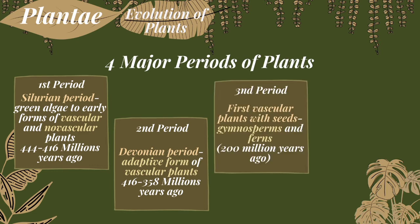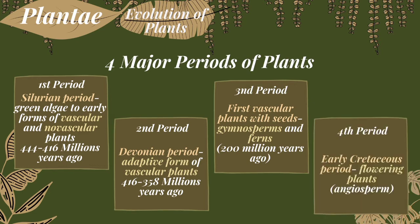The third period happened 200 million years ago, when vascular plants now had seeds — the birth of gymnosperms, a non-flowering plant. And lastly, the fourth period is the Early Cretaceous period, where plants again evolved and bloomed flowers, which are called angiosperms — flowering plants.